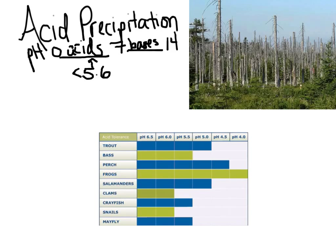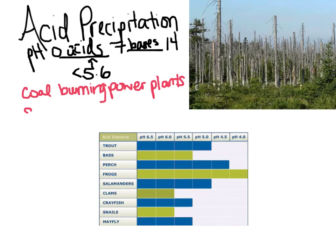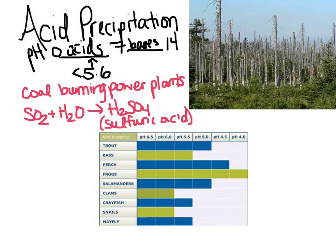The major cause of acid precipitation is coal-burning power plants, from which most of our electricity in the United States comes. When you burn coal, it releases carbon dioxide causing climate change, but it also releases sulfur dioxide (SO2). As sulfur dioxide rises into the atmosphere, it reacts with water vapor to form H2SO4 — sulfuric acid. Nitrous oxides from burning coal also react with water vapor to form nitric acid. This causes rain to have a lower pH value.